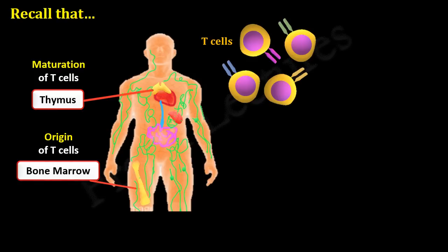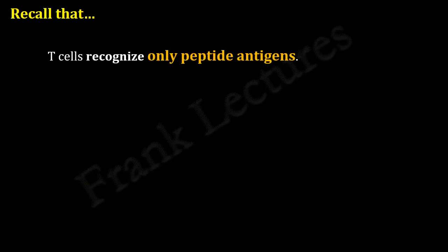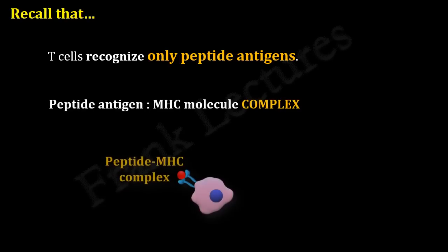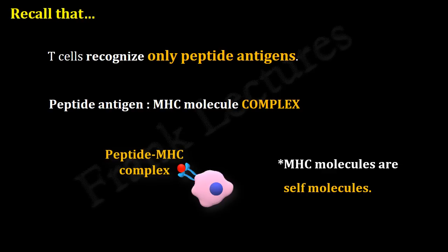Developing T-cells in the thymus are known as thymocytes. Each of these thymocytes have randomly generated antigenic specificity. We also know that T-cells recognize only peptide antigens, and importantly, they don't recognize them in isolation. T-cells recognize peptide antigens as peptide-MHC complexes. Note that these MHCs are our body's own molecules, and therefore we also call them self-MHC molecules. T-cells recognize and bind both the MHC molecule and the peptide antigen displayed on the target cell.